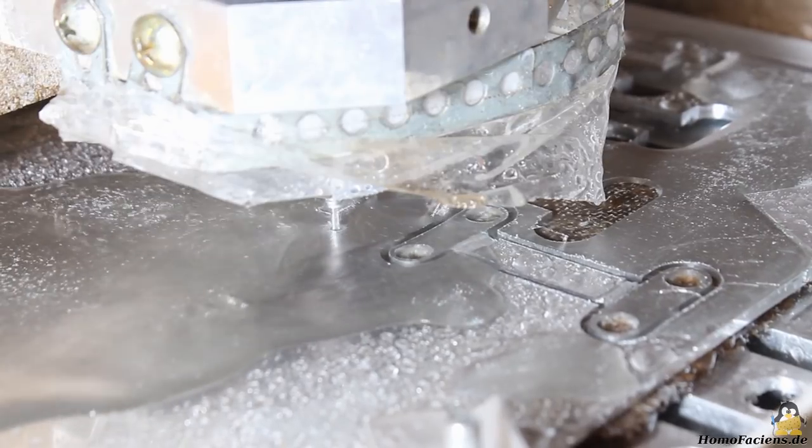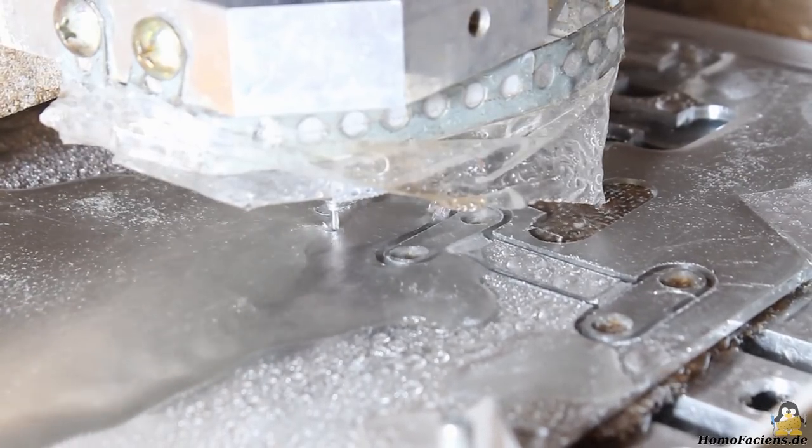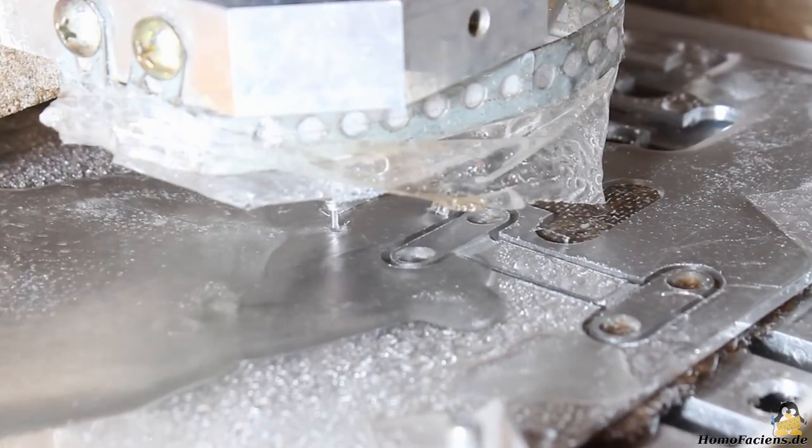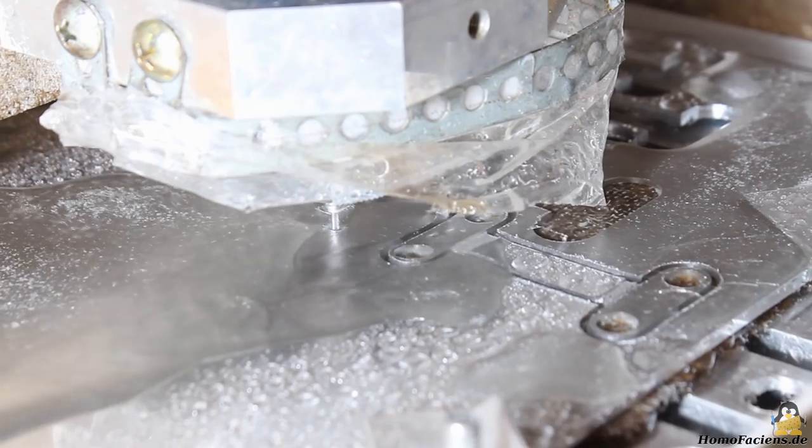A disadvantage of the 1.5mm tool is that this type cracks quickly whenever the machine parameters are too far from optimum. Operating errors result in a noticeable loss of money over time.